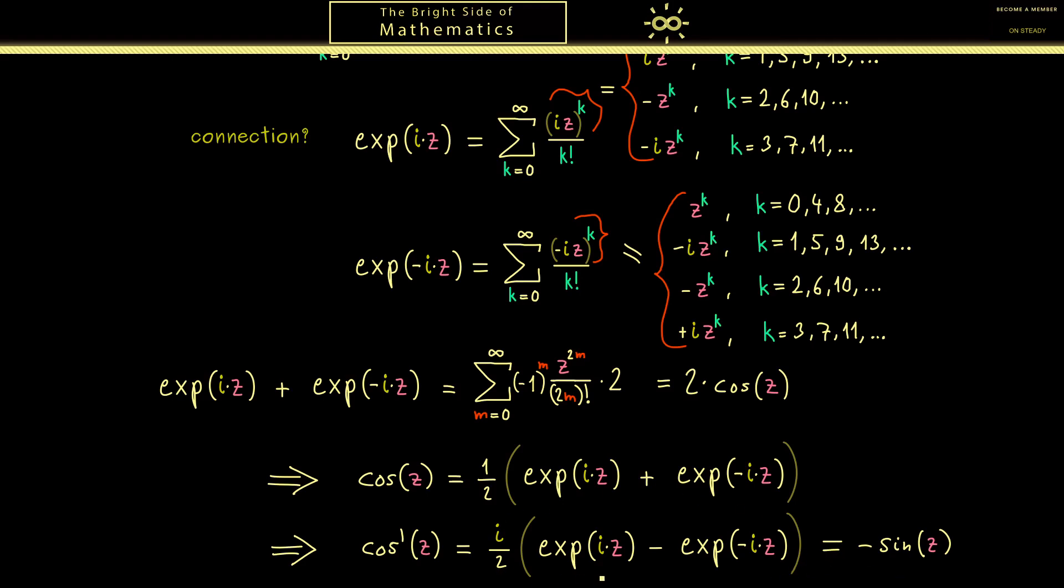Hence also for the sine we now have a representation with exponential functions. And now these 2 representations can be very helpful when you do calculations with cosine and sine involved. Simply because powers of exponential functions are easier to deal with than powers of cosine or sine. However, in our course here it's very important to know that exponential functions, cosine and sine are all holomorphic functions. I think that's good enough for today and I really hope that I see you in the next video. Have a nice day and bye.